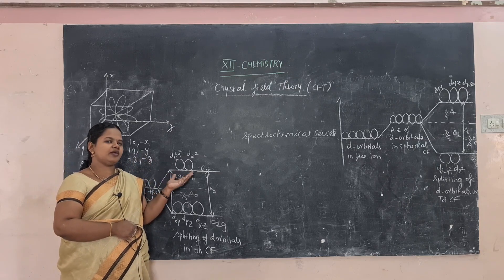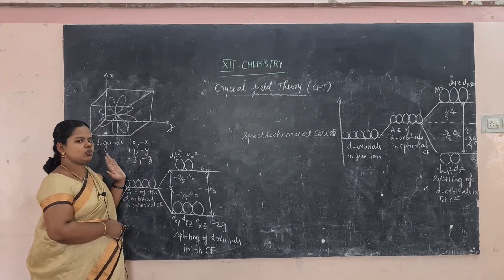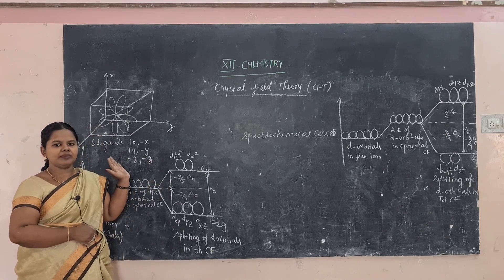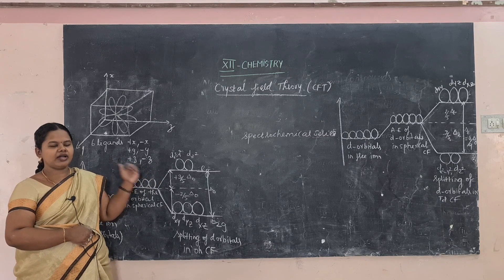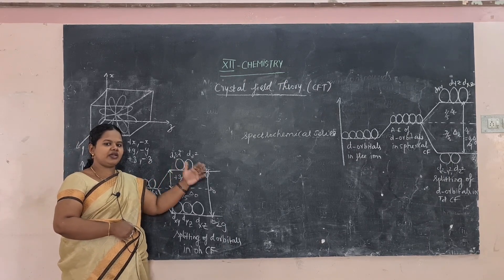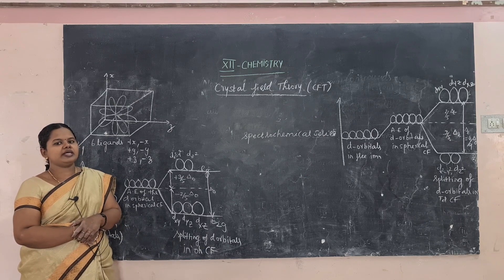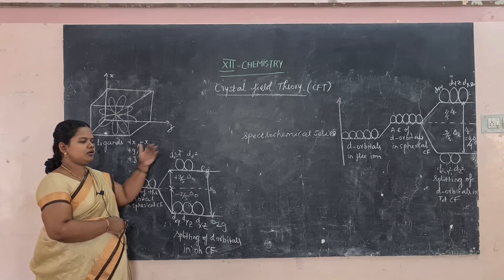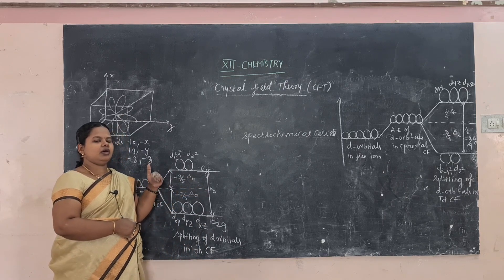Crystal Field Theory can explain the color, magnetic properties, and the nature of bonding in coordination complexes. We have seen how the degenerate d-orbitals split into two levels in both octahedral and tetrahedral fields. CFT assumes the bond between the metal ion and ligand is purely ionic, treating negative species as point charges and positive ones as dipoles, and explains complex formation through hypothetical steps.